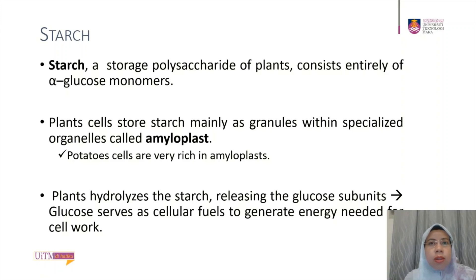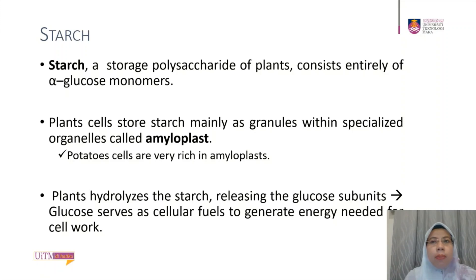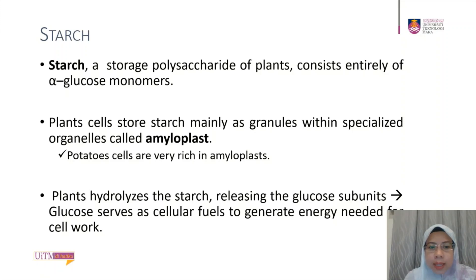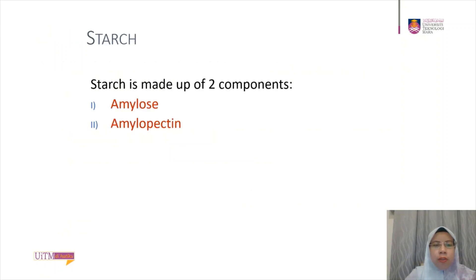Most of the glucose units in starch are joined by 1,4 glycosidic bonds — a linkage between carbon number 1 and carbon number 4 — similar to the glucose units in maltose. Starch consists of alpha glucose and is made up of two components: amylose and amylopectin.